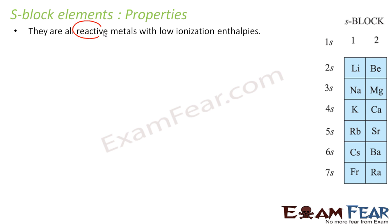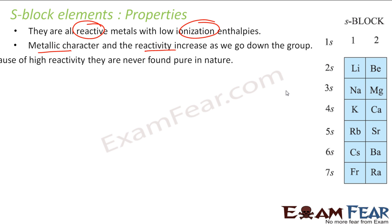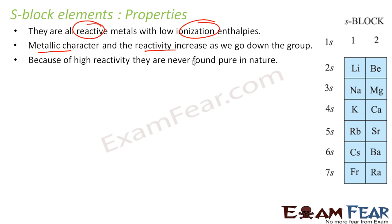The properties of s-block elements are: they are all reactive metals and they have very low ionization enthalpy. We will discuss ionization enthalpy in the next few slides. Their metallic character and reactivity increases as we go down the group — they become more reactive. Because of their high reactivity, they are never found in pure states.